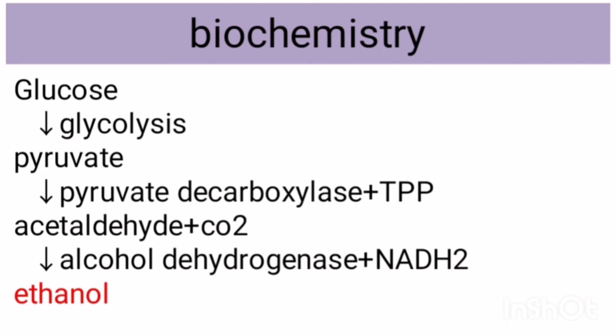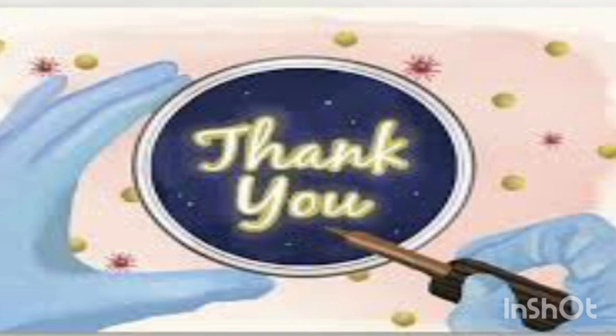Next is the biochemistry of ethanol production. Several steps are involved in the conversion of starch into ethanol. Glucose undergoes glycolysis and produces pyruvate. Then, pyruvate decarboxylase with thiamine pyrophosphate converts the pyruvate into acetaldehyde and carbon dioxide. It is then acted upon by another enzyme, alcohol dehydrogenase, and produces ethanol. This is about ethanol production. Thank you.